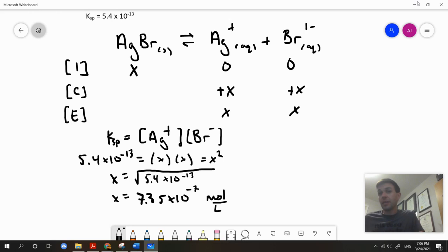Remember that x represents the molar solubility, and so here we have a molar solubility of 7.35 times 10 to the negative 7 moles per liter.